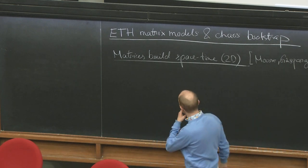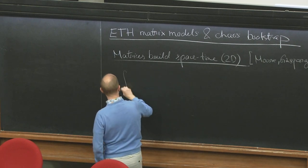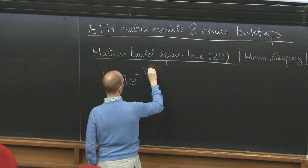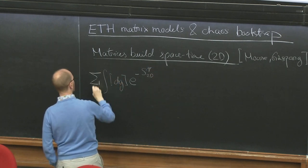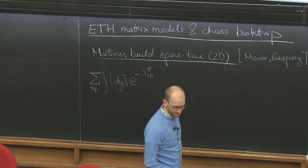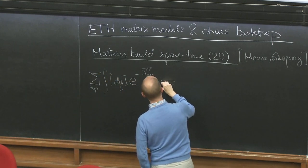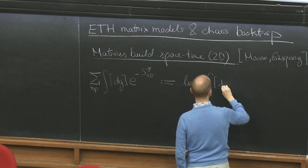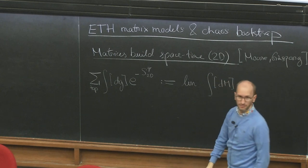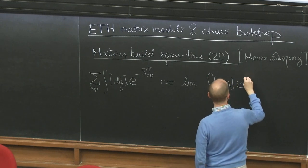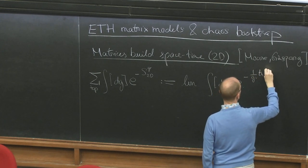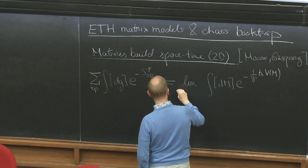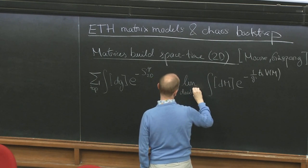The point here is that one way of constructing the path integral of two-dimensional gravity, including a sum over topologies, is by starting with a matrix model. It's going to be a certain limit of a matrix model, where I integrate over a distribution of matrices — what we would call a random matrix — with some potential, trace V of M. This limit is what people refer to as a double scaling limit.